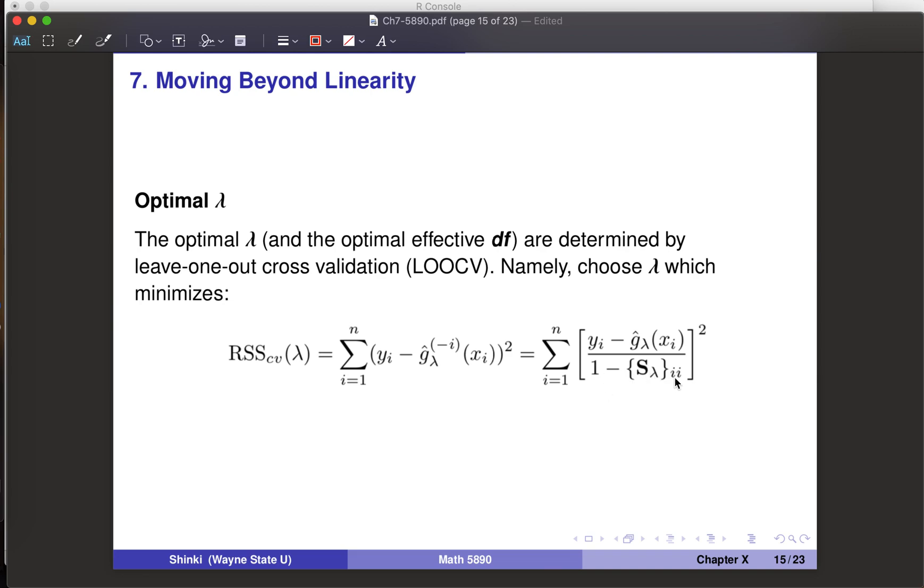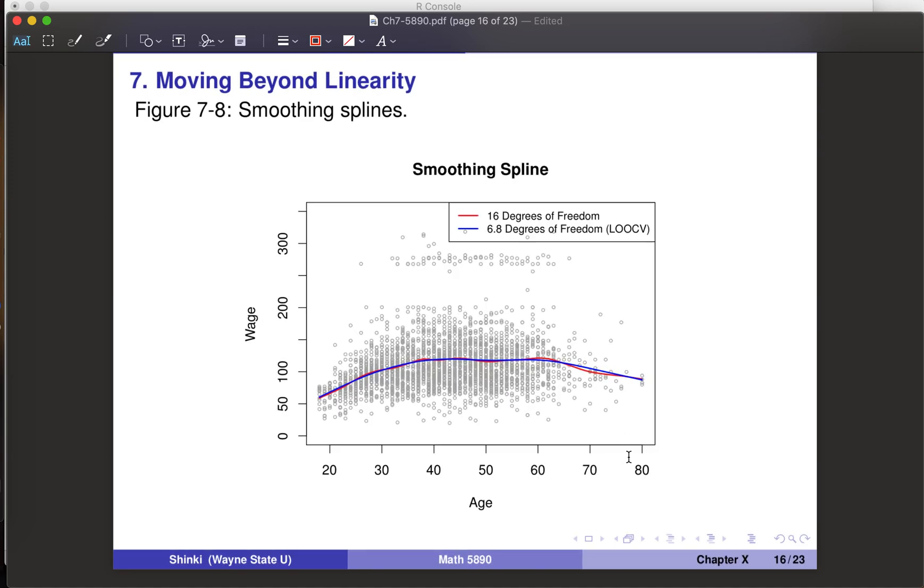Actually, for this specific case, we don't really have to fit the model n times. We just need the usual fitted curve using all observations, and we adjust this by dividing by 1 minus S lambda ii. If we calculate this, this is mathematically the same as the LOOCV error. This only applies for linear regression. It cannot be applied for more complicated statistical models, but this can be calculated quickly. This is also called GCV, generalized cross-validation error. In this way, we can determine lambda.